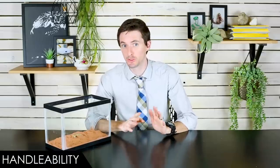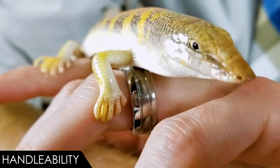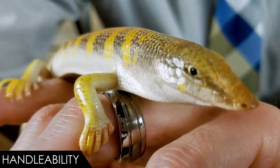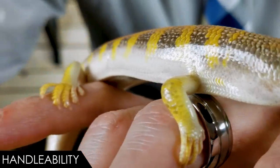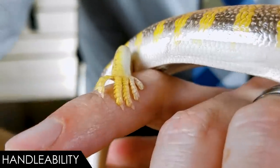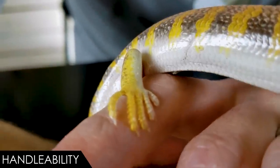When it comes to handleability, we give the sandfish skink a score of 2 out of 5. And this is actually well reflected by the fact that our sandfish skink is in a glass enclosure right now. It's not because they're going to hurt you. They're certainly not. Their claws are built for digging, not really built for gripping onto anything. They're not going to scratch you. They can bite, but it doesn't hurt. And generally they're not going to attempt this either. They're not going to hurt you.